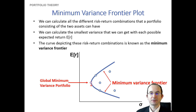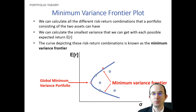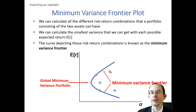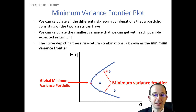This is the minimum variance frontier, reflecting all possible combinations of portfolio risk and return. There are options available on the interior, but we really only care about the frontier itself, simply because that's where the most attractive risk and return combinations lie.